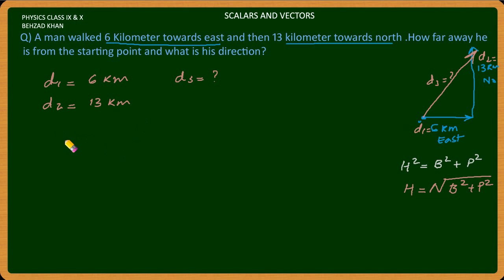So our solution will be d3, which is the square root of 6 km squared plus 13 squared. This will be the square root of 6 square, 36, and 13 square, 169.